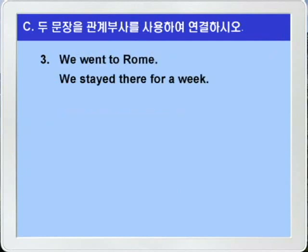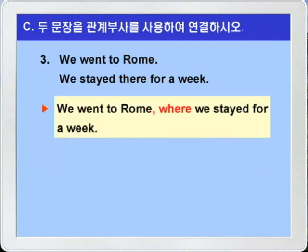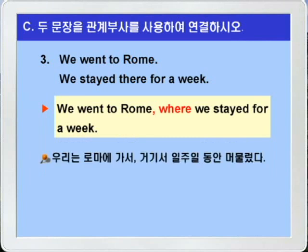3번. 'We went to Rome. We stayed there for a week.' 우리는 로마에 갔다 — 우리는 그곳에서 일주일 동안 머물렀다. 두 문장에서 공통되는 것은 Rome과 there죠. 따라서 Rome을 선행사로 하고 장소의 부사 there를 장소의 관계부사인 where로 바꿔서 선행사인 Rome 뒤에다 연결시키면 되겠습니다. 문맥상 로마에 가서 그곳에서 일주일 동안 머무른 것이니까 계속적 용법으로 써야겠습니다. 'We went to Rome, where we stayed for a week.'